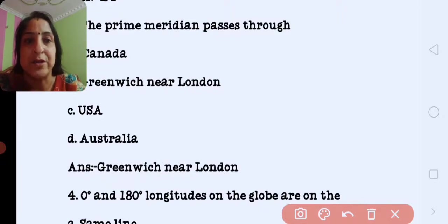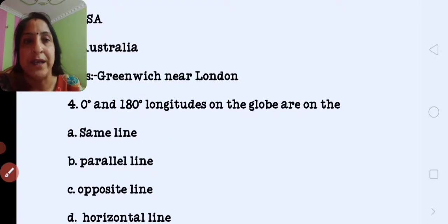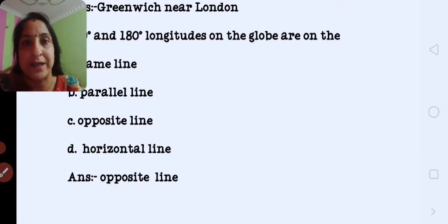Next, 0 degree and 180 degree on the globe are on the same line, parallel line, opposite line or horizontal line. Correct answer is opposite lines.